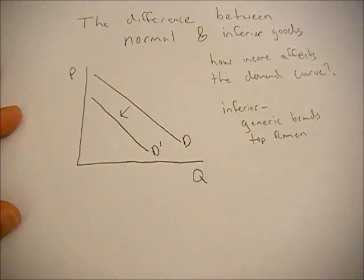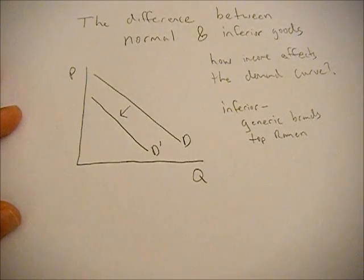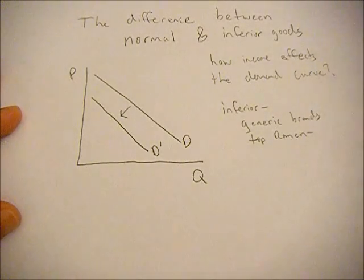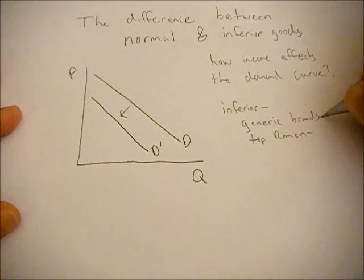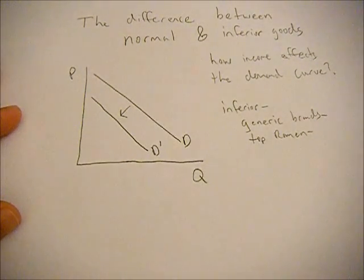The reason it's inferior is because when your income goes up, you're going to substitute away from consuming those goods to consuming more expensive goods. So instead of Top Ramen, you might consume spaghetti. Instead of generic brands, you might start buying name brands.